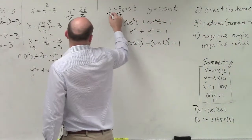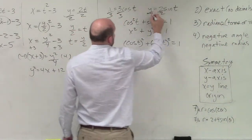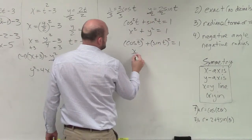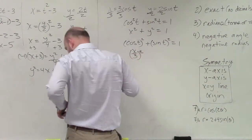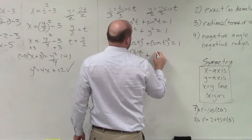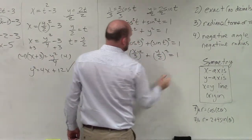So I divide by 3, divide by 2. So therefore, I can say x plus 3 squared plus y over 2 squared equals 1.